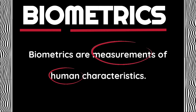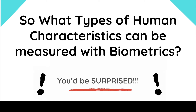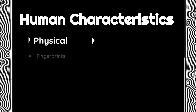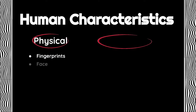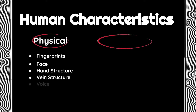So our next question is what types of human characteristics can be measured with biometrics? The types of characteristics that biometrics look at fall into two categories. The first category is physical characteristics. These are things like our fingerprint, what your face looks like, the structure of your hand, the structure of the veins in your hands, your voice, and even the structure of your eyes.